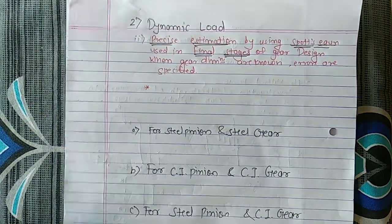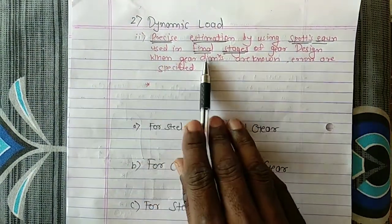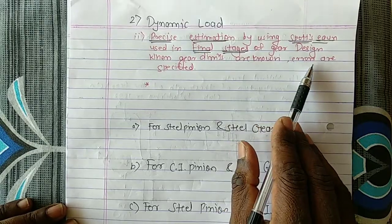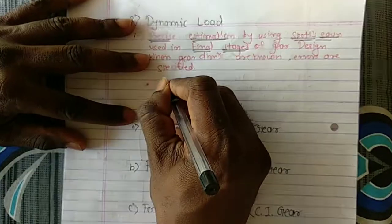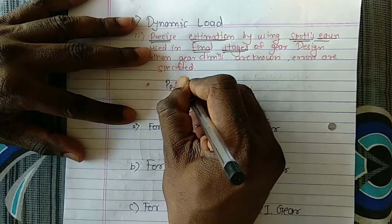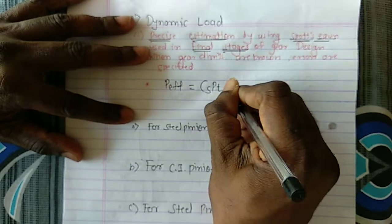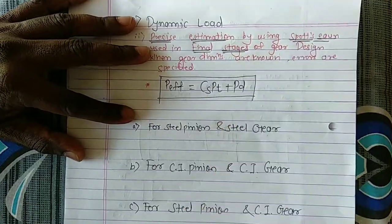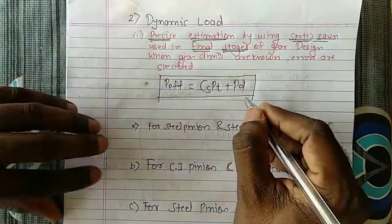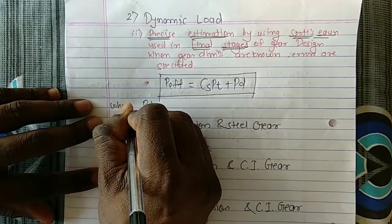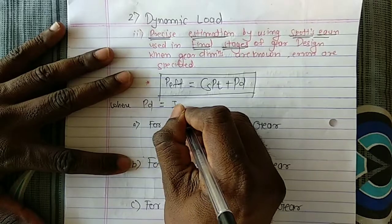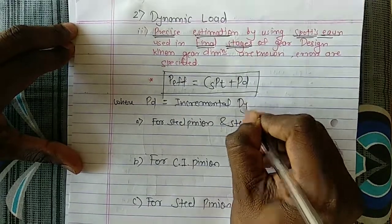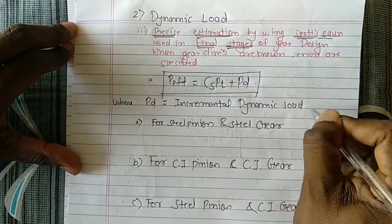This is the precise estimation using Spott's equation. It is generally used in the final stages of the gear design when the gear dimensions are known and errors are specified. The equation is: P_effective = C_S × P_T + P_D, where P_D is the incremental dynamic load, also called the dynamic load.